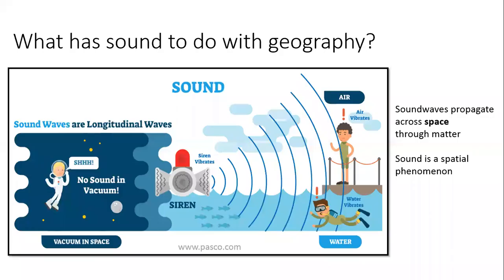Perhaps the first thing to say here is that sound is a spatial phenomenon — in other words, sound propagates through space. Sound waves are compression waves that are produced by a vibrating object, which could be for example a bell, a drum, or a siren. When I ring the bell, or beat the drum, or sound the siren, all these objects vibrate and the vibration causes the air molecules around these objects to move. These molecules bump into the molecules close to them and in turn cause them to vibrate as well, resulting in a wave of vibrations that travels through the air and is carried to our ear.